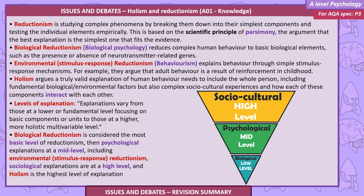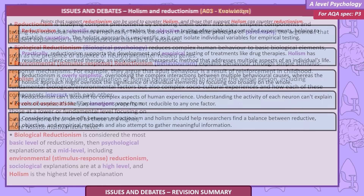Levels of explanation range from lower or fundamental levels focusing on basic components, to higher, more holistic, multivariable levels. Biological reductionism is considered the most basic level. Psychological explanations are at a mid-level, including environmental stimulus-response reductionism. Sociological explanations are at a high level, and holism is the highest level of explanation.